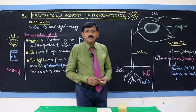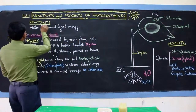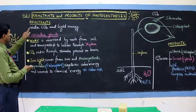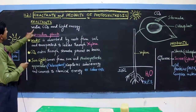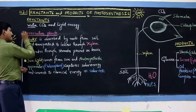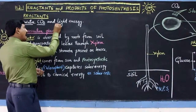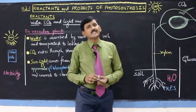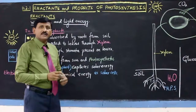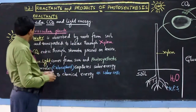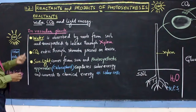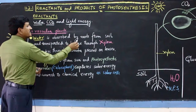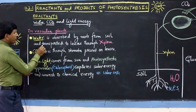Today our topic is reactants and products of photosynthesis. First, we shall discuss the reactants. The reactants of photosynthesis are water, carbon dioxide, and light energy. Light energy is also the force that drives the process of photosynthesis in vascular plants. First, we shall put water — water is absorbed by roots from soil and transported to leaves.